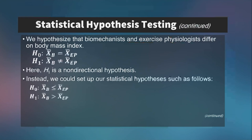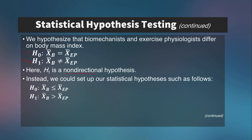For example, we might hypothesize that biomechanists and exercise physiologists differ in their BMI. The null hypothesis H₀ would state that the mean body mass of biomechanists equals the mean body mass of exercise physiologists. The alternative hypothesis H₁ states they do not equal each other. In this case, H₁ is a non-directional hypothesis — we're not hypothesizing which group will have a greater body mass, just that there is a difference.